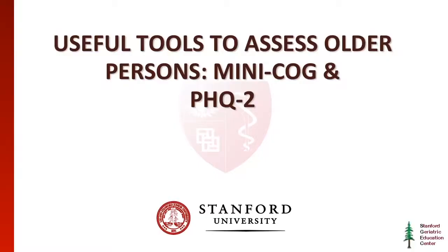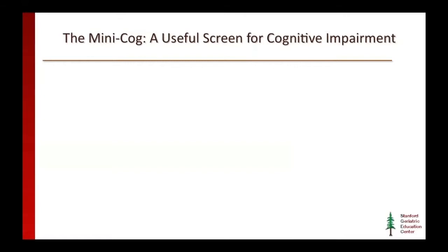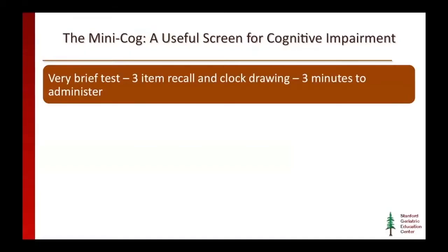There are some brief tools that are really useful in assessment: the MINI-COG and the Patient Health Questionnaire 2. The MINI-COG is a really useful screening tool for cognitive impairment, often used with well-functioning older adults living in the community. It includes a very brief test — a three-item recall and then a clock draw.